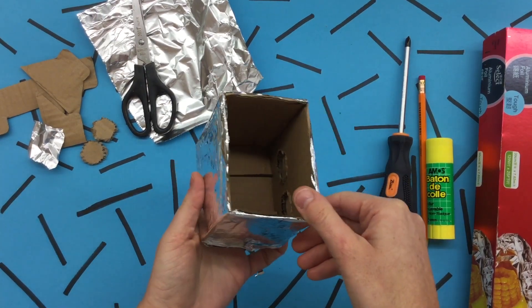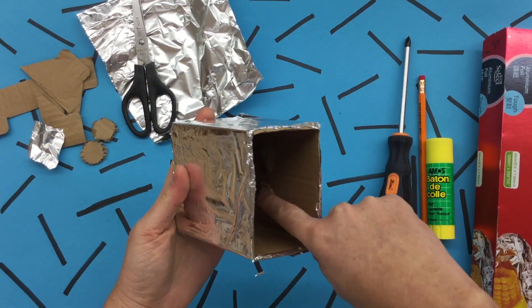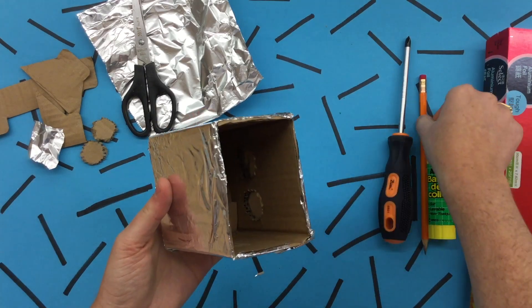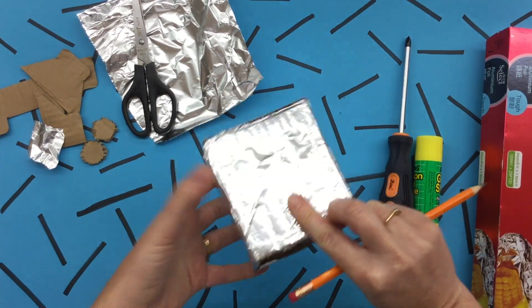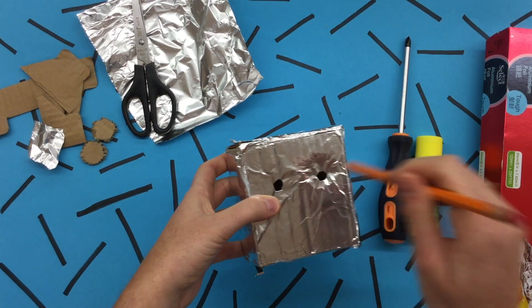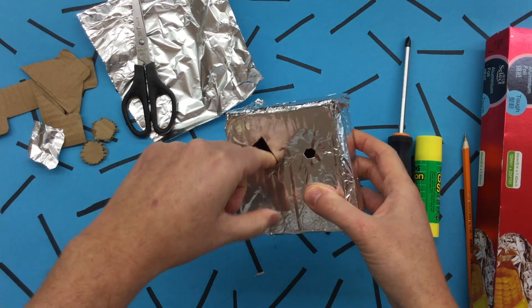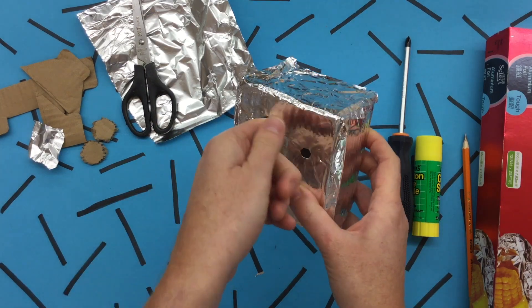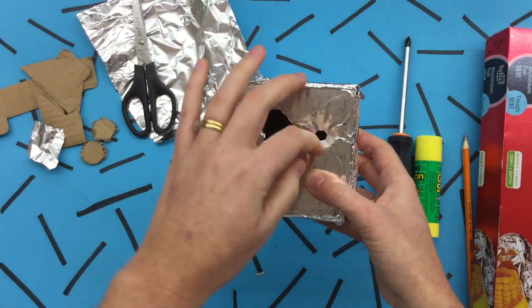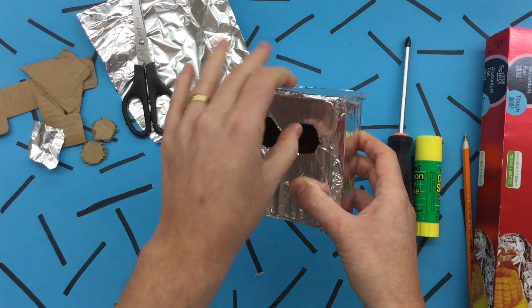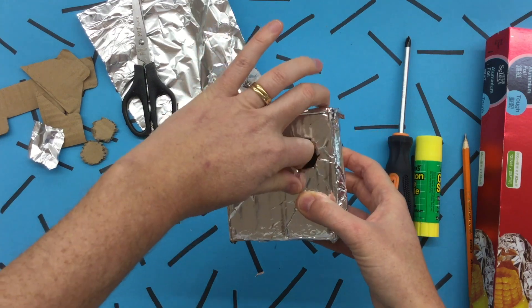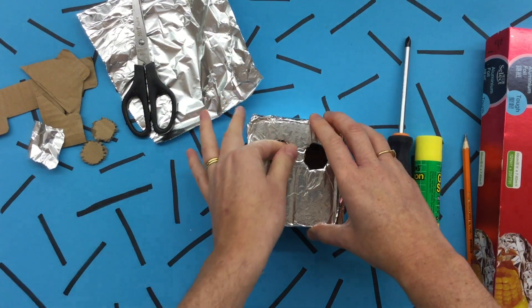There. Next I want to punch out the eyes so I can see them. So looking at the inside, I'm going to poke a little bit of hole and then carefully push through and wrap the tin foil around the edge of the holes in my box. There.